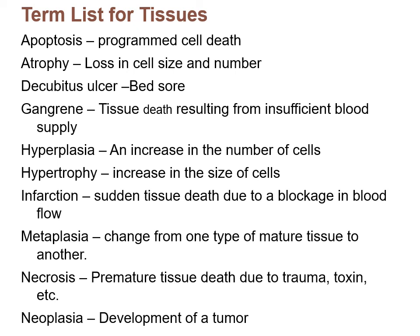Here are some key tissue-related terms. Apoptosis is programmed cell death. Atrophy is loss in cell size and number. A decubitus ulcer is another name for a bed sore. Gangrene is tissue death resulting from insufficient blood supply. Hyperplasia is an increase in the number of cells — don't confuse this with hypertrophy, which is an increase in cell size. An infarction is sudden tissue death due to a blockage in a blood vessel impairing blood flow. Metaplasia is a change from one type of mature tissue to another. Necrosis is mature tissue death due to trauma or toxins. Neoplasia is the development of a tumor.